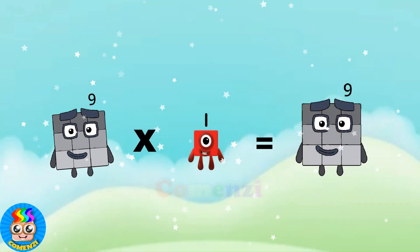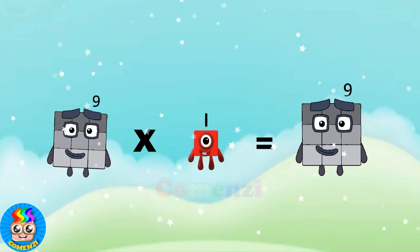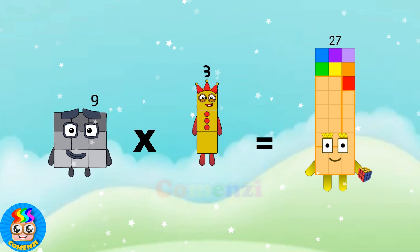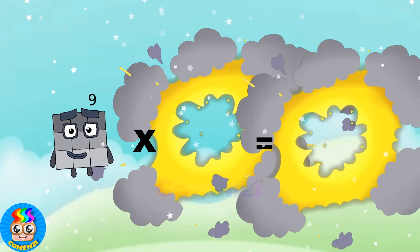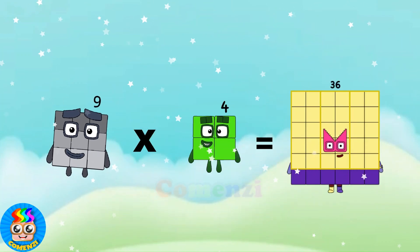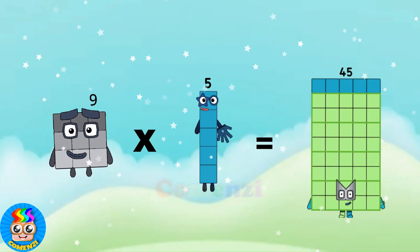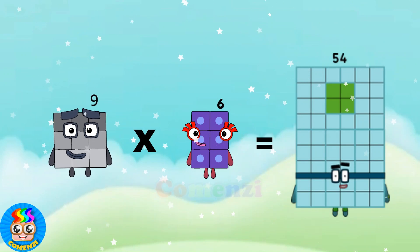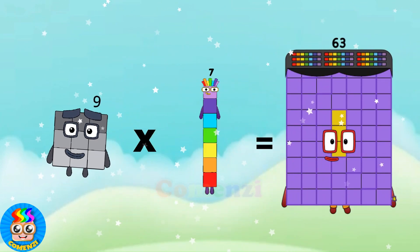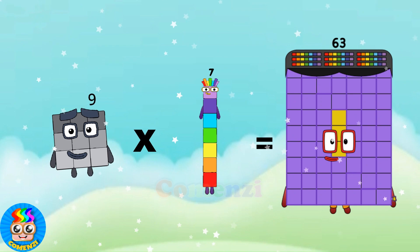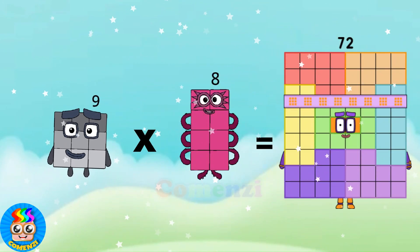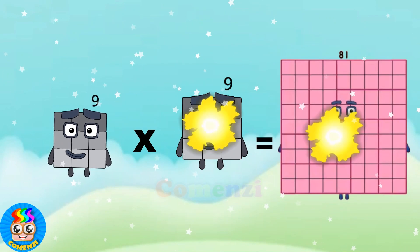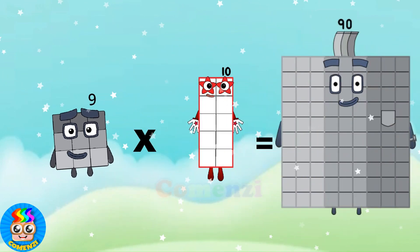9 times 1 is 9. 9 times 2 is 18. 9 times 3 is 27. 9 times 4 is 36. 9 times 5 is 45. 9 times 6 is 54. 9 times 7 is 63. 9 times 8 is 72. 9 times 9 is 81. 9 times 10 is 90.